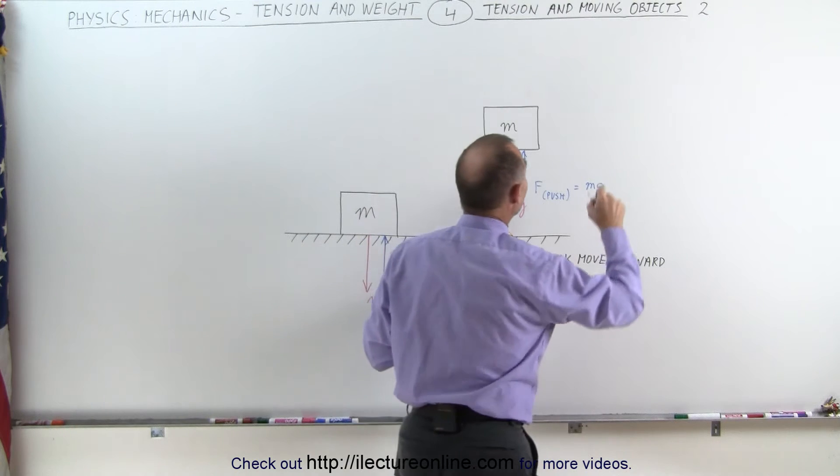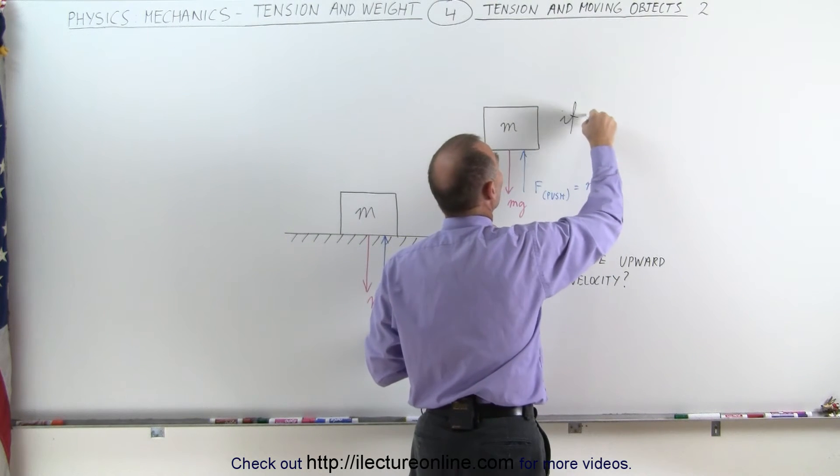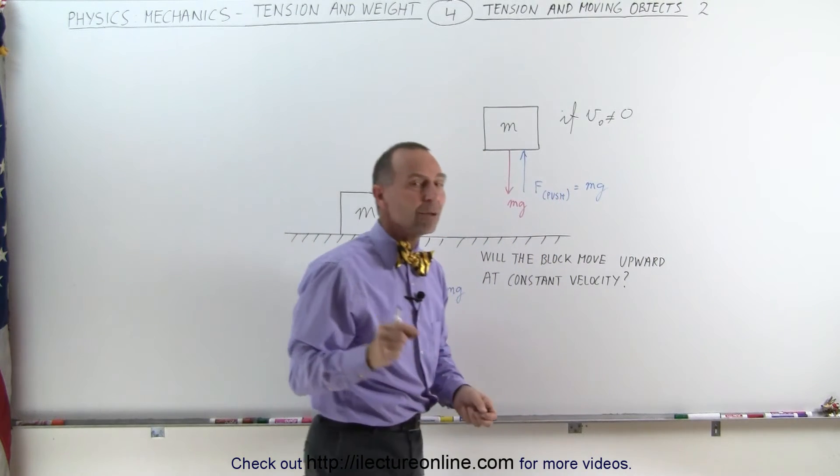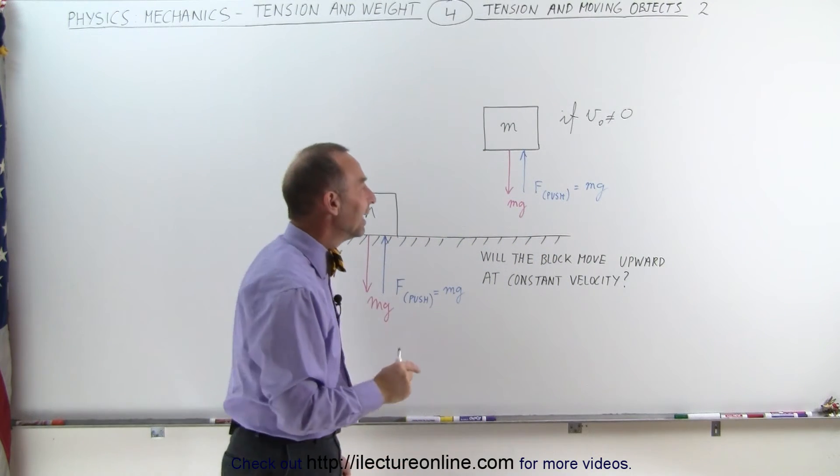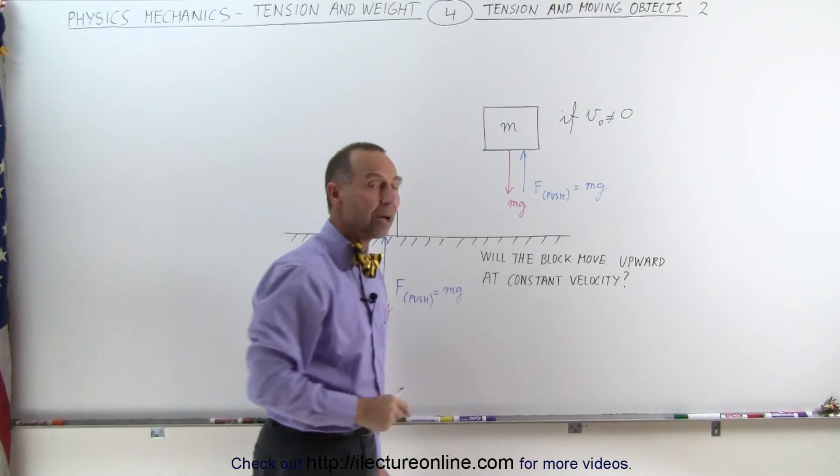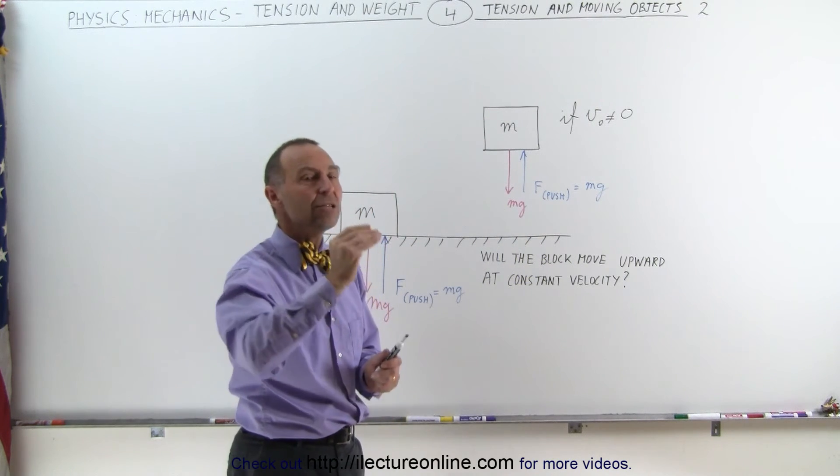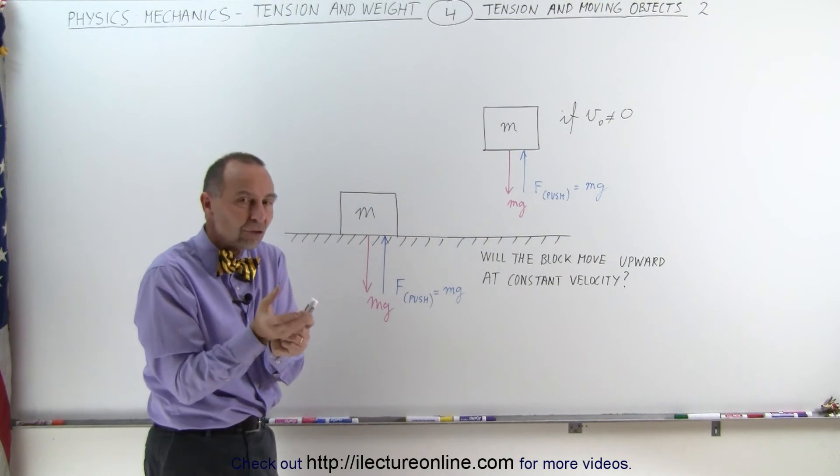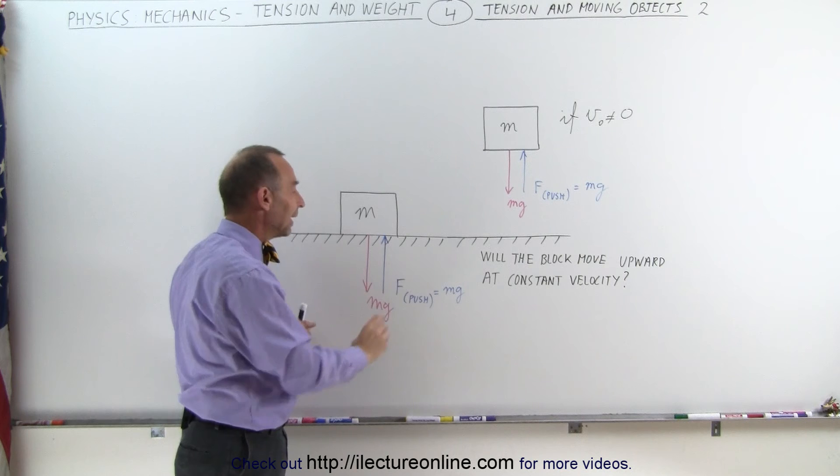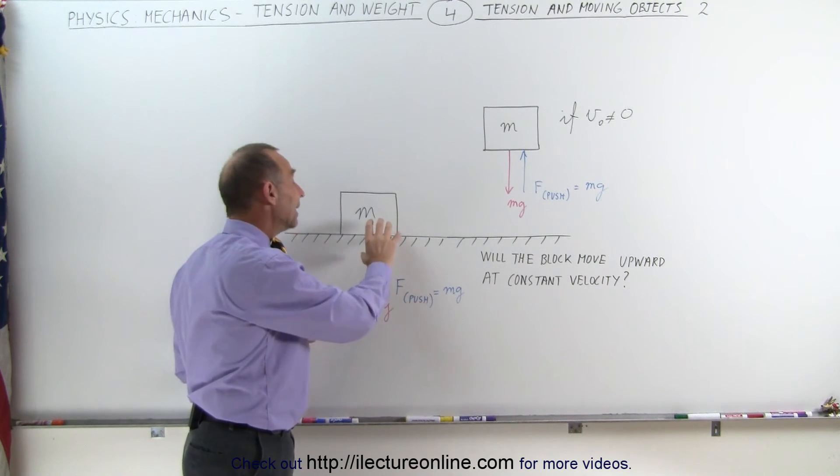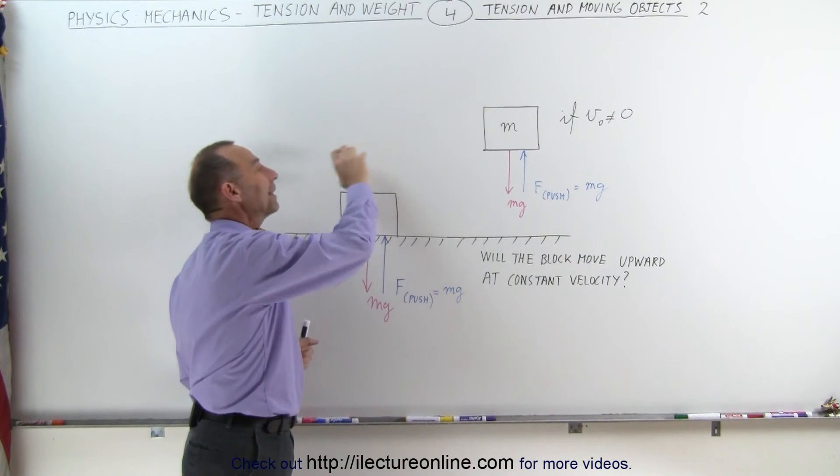So, the requirement is, if v initial is not equal to zero. In other words, if the block is already moving at some velocity, then if the push is exactly equal in magnitude to the weight of the object, the block will simply continue moving at that velocity. Same here, if we give it an initial shove to get the block moving, and then the force of the push is equal to the weight, then the block will continue to move at that velocity.